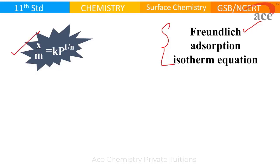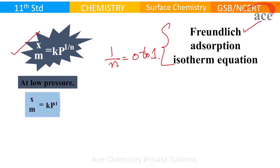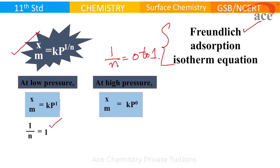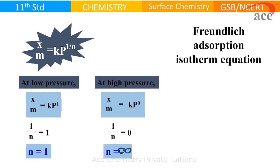x by m is equal to k P raised to 1 by n, where 1 by n is between 0 to 1. At low pressure, the rate of adsorption is directly proportional to pressure. At very high pressure, the rate of adsorption is independent of pressure. The 1 by n value is between 0 to 1, so it's greater than 0 and less than 1 for moderate pressure.